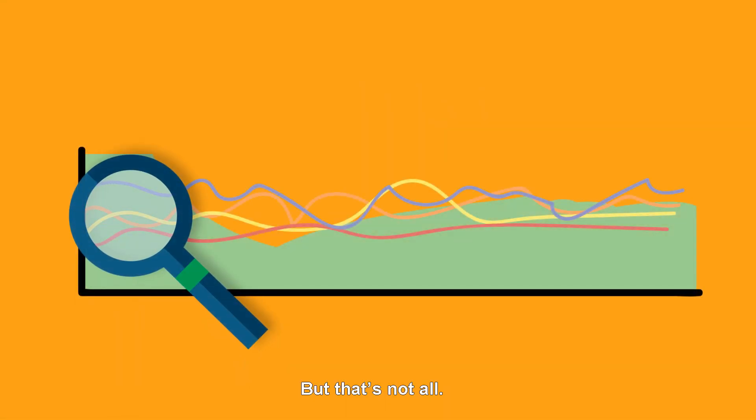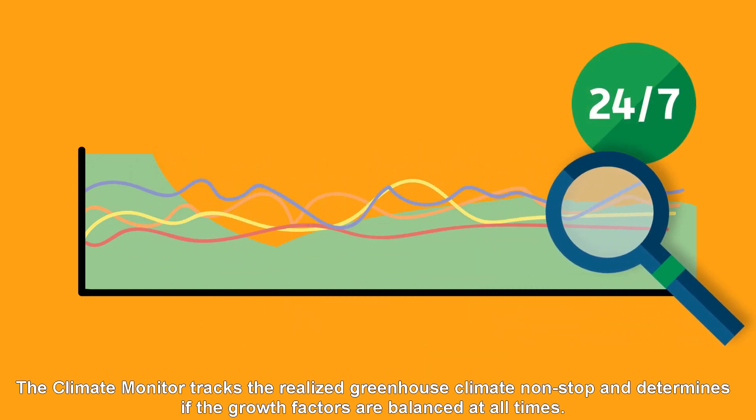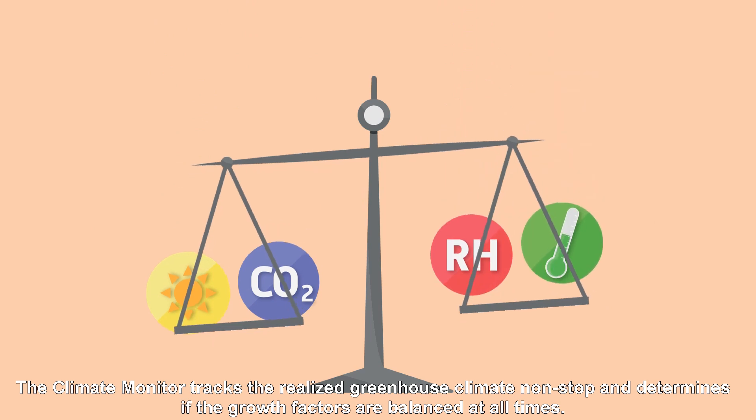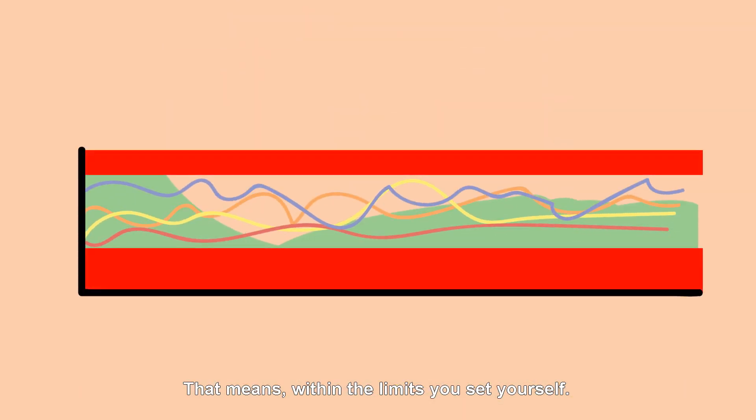But that's not all. The climate monitor tracks the realized greenhouse climate non-stop and determines if the growth factors are balanced at all times. That means within the limits you set yourself.